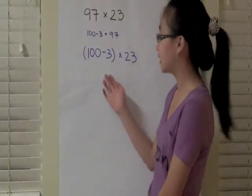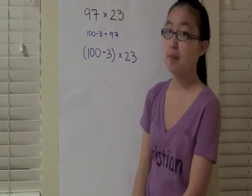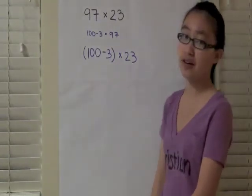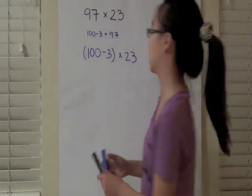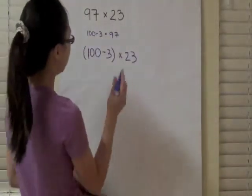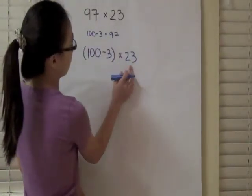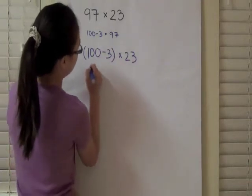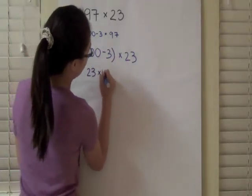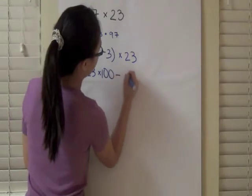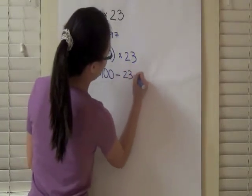And this may make it seem a little bit more complicated at first, but when you use the distributive property, you'll find out that it's actually a lot easier. See, when you distribute 23 to 100 and then to 3, you get 23 times 100 minus 23 times 3.